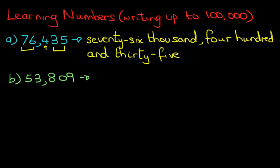Okay, so let's write this down. We start on the left hand side as always with the thousands. So we write down 53. There we go, 53,000. Don't forget to write 'thousand' and comma.